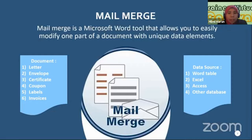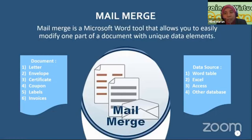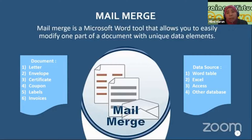How does Mail Merge work? You need to understand two things. The first part is a document — you need to have or create the document. Your document can be a letter, envelopes, certificates, labels, or invoices. Then you need your data source. Your data source can come from Microsoft Excel, a Word table, Microsoft Access, or other databases. These are the two things that are very important in Mail Merge.